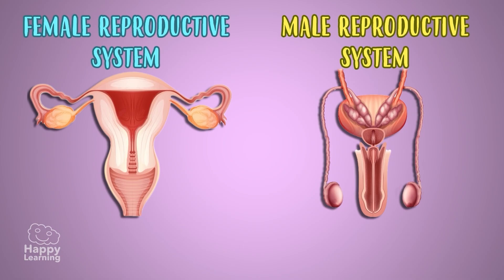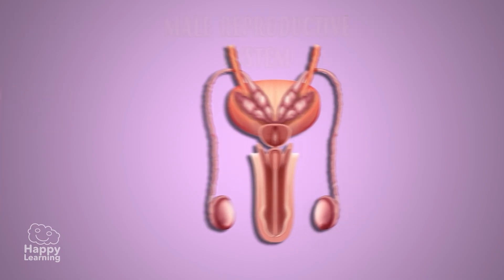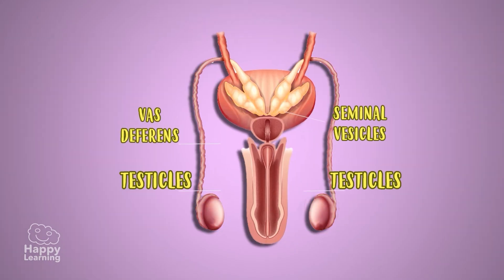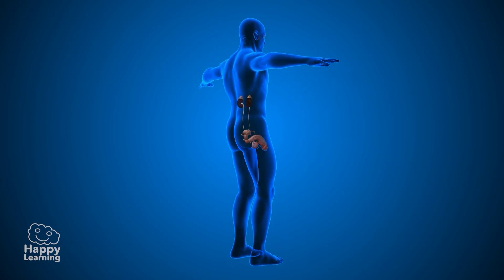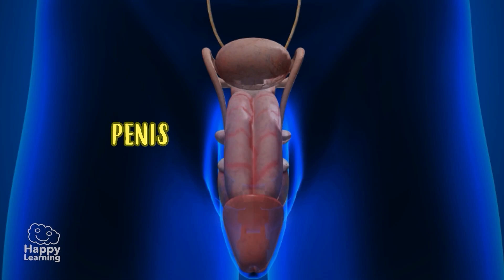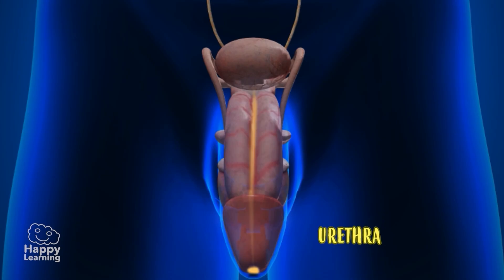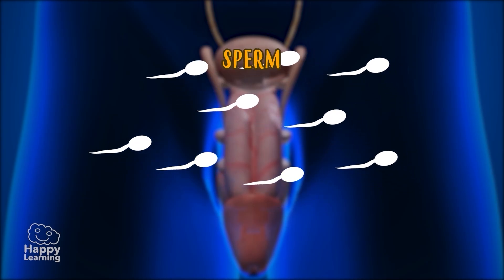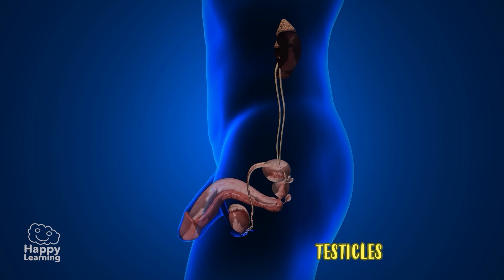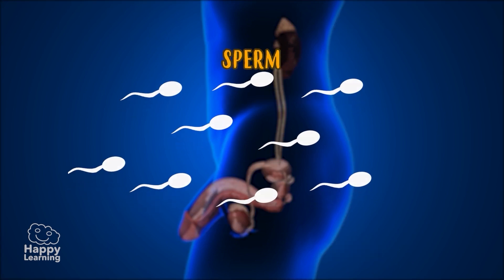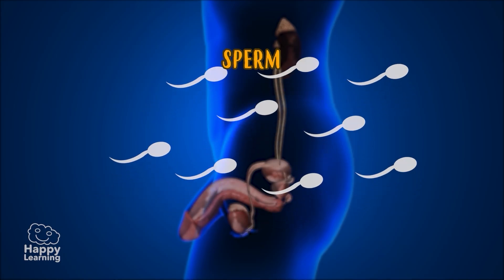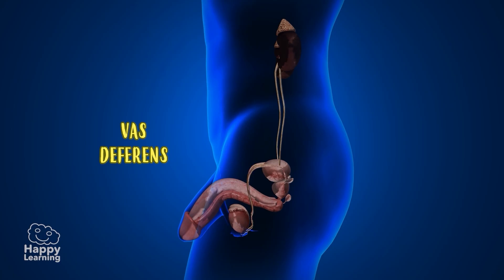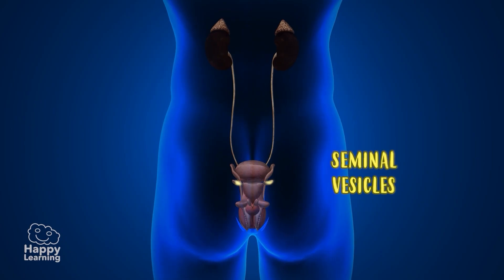Now let's look at the male reproduction system. Its organs include the testicles, the vas deferens, the seminal vesicle, the penis, and the urethra. The organs of the male reproduction system are in the interior as well as on the exterior of the man's body. The penis is an external muscular organ, and the urethra is a tube which expels both urine and semen to the exterior. Semen is a mixture of liquid seminal and sperm. The testicles are two organs found on the exterior of the body; during puberty, male sex hormones called testosterone start to be produced. The vas deferens communicates the testicles with the urethra and is found within the body. The seminal vesicle produces a fluid called liquid seminal, which transports the sperm.